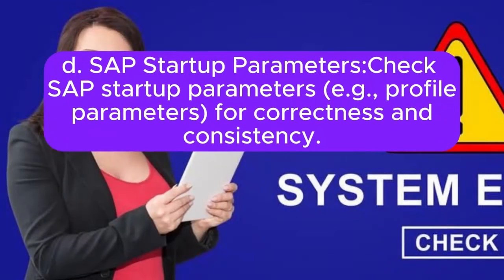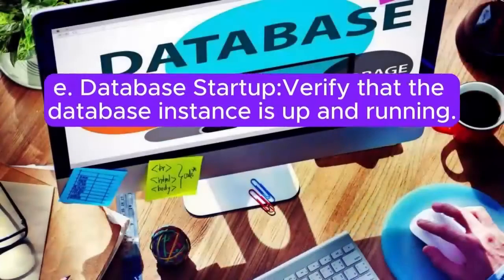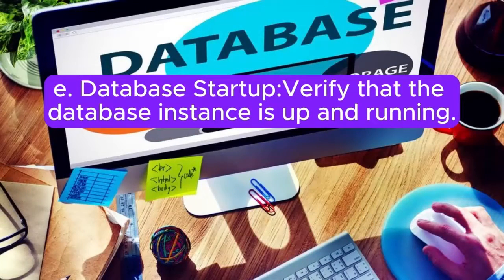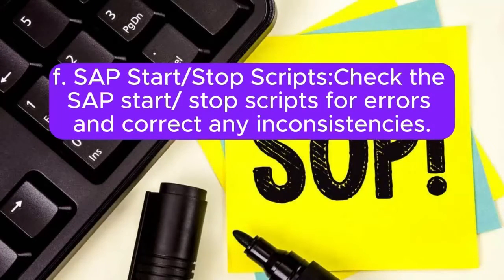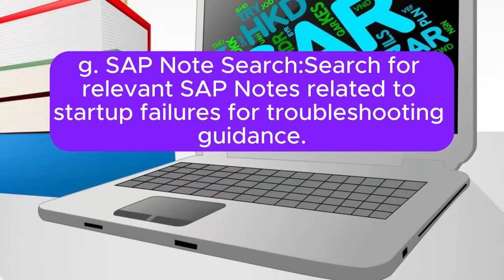D. SAP startup parameters: check SAP startup parameters, e.g. profile parameters, for correctness and consistency. E. Database startup: verify that the database instance is up and running. F. SAP start/stop scripts: check SAP start/stop scripts for errors and correct any inconsistencies. G. SAP note search: search for relevant SAP notes related to startup failures for troubleshooting guidance.